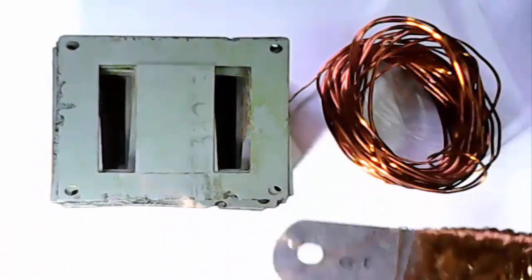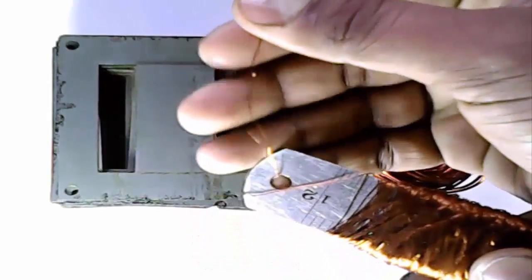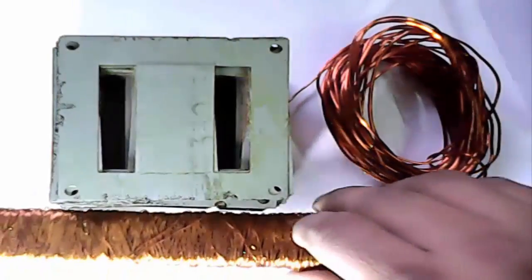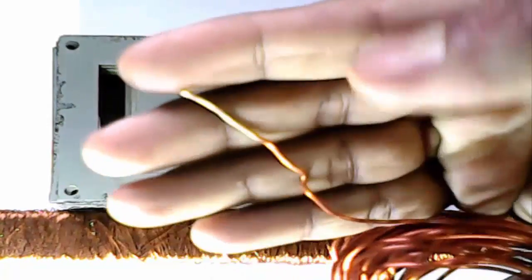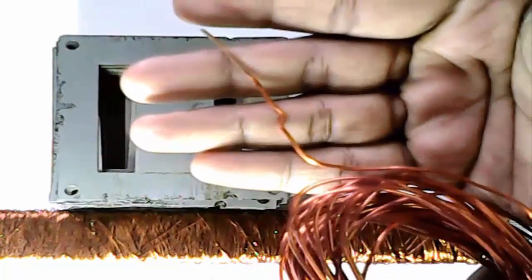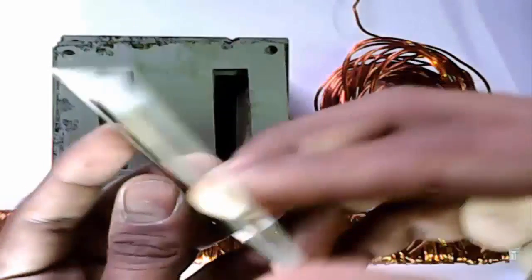This is AC wire, slim wire, and this is fat and strong DC wire. This is iron sheet.